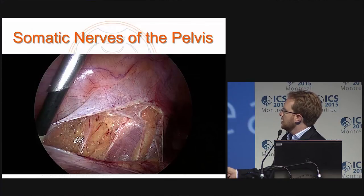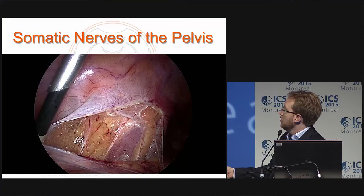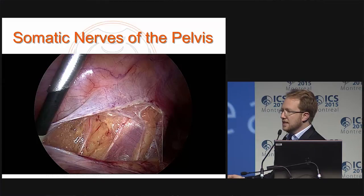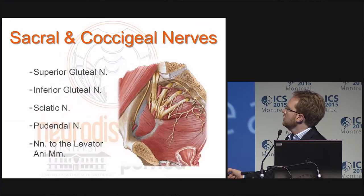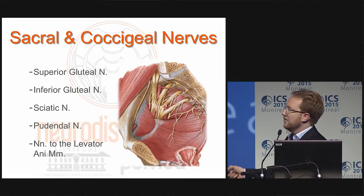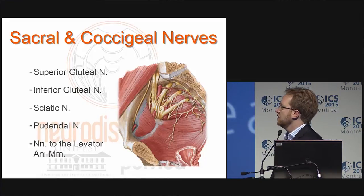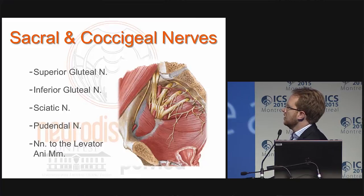This is the psoas muscle. These are the external iliac vessels. This is the iliohypogastric, ilioinguinalis, and genitofemoralis on the left side, very close to the peritoneal surface. We can also have access to the superior gluteal, inferior gluteal, sciatic nerve, posterior cutaneous femoralis nerve, pudendal nerve, and the nerves to the levator muscles.